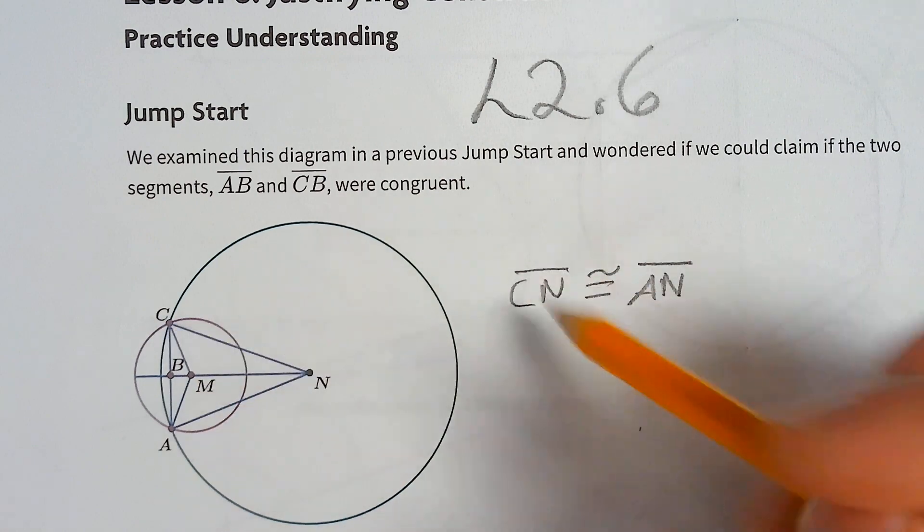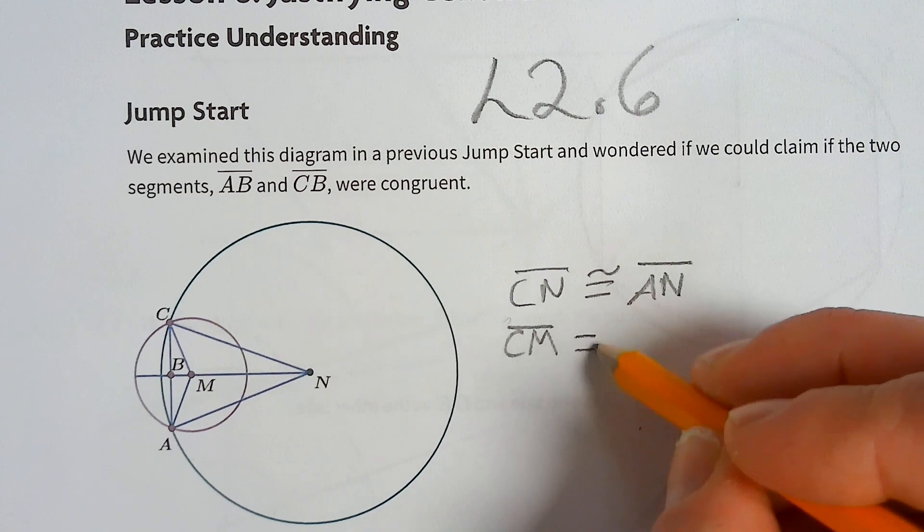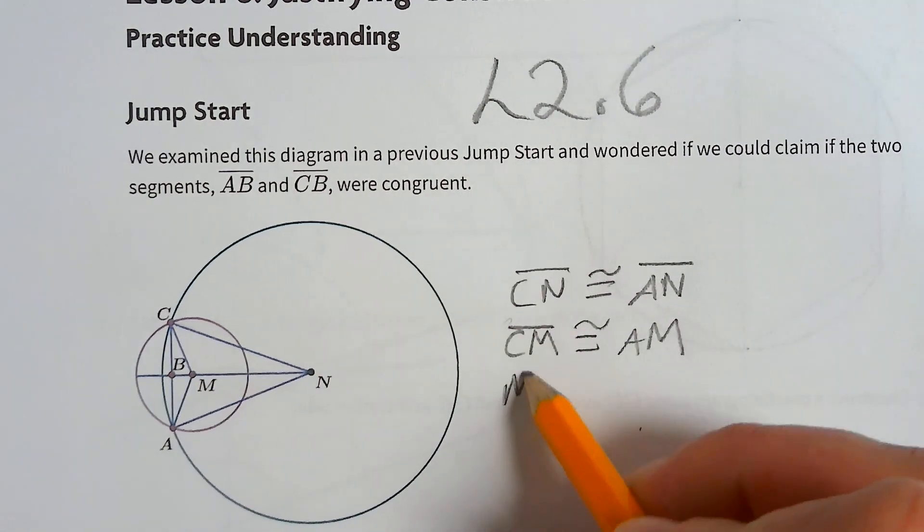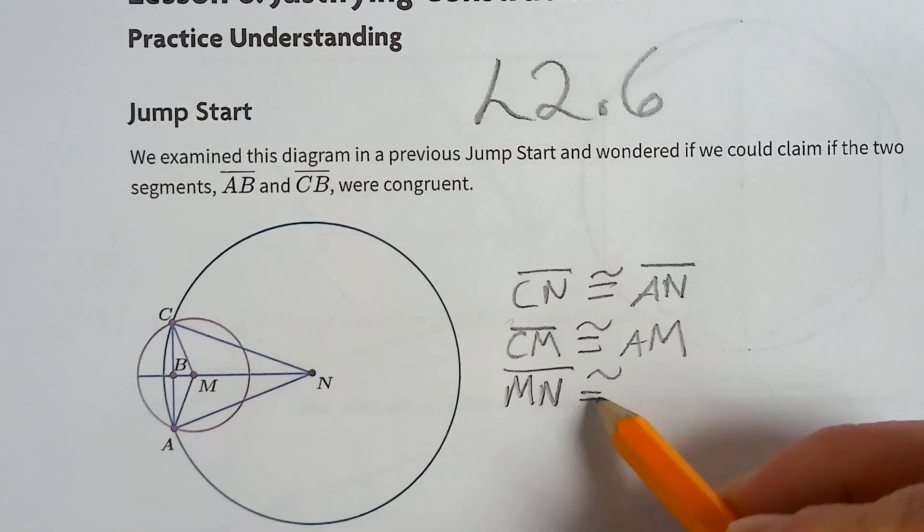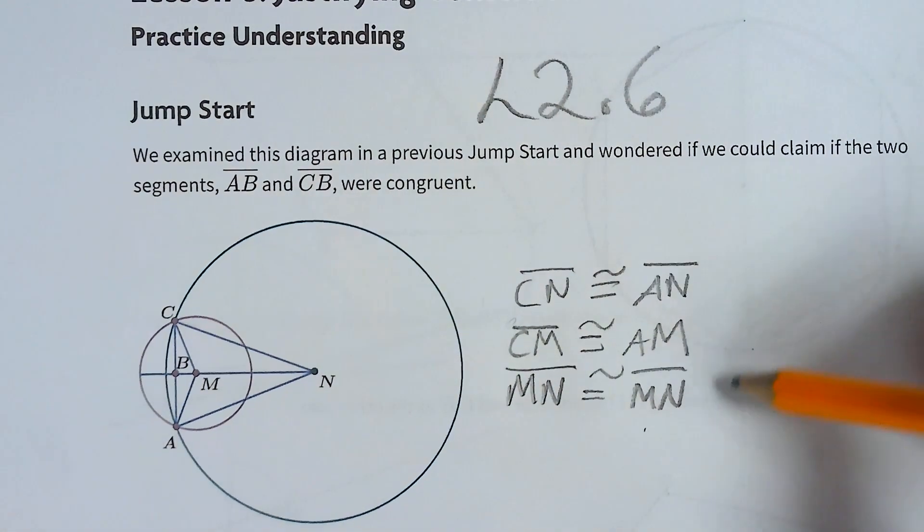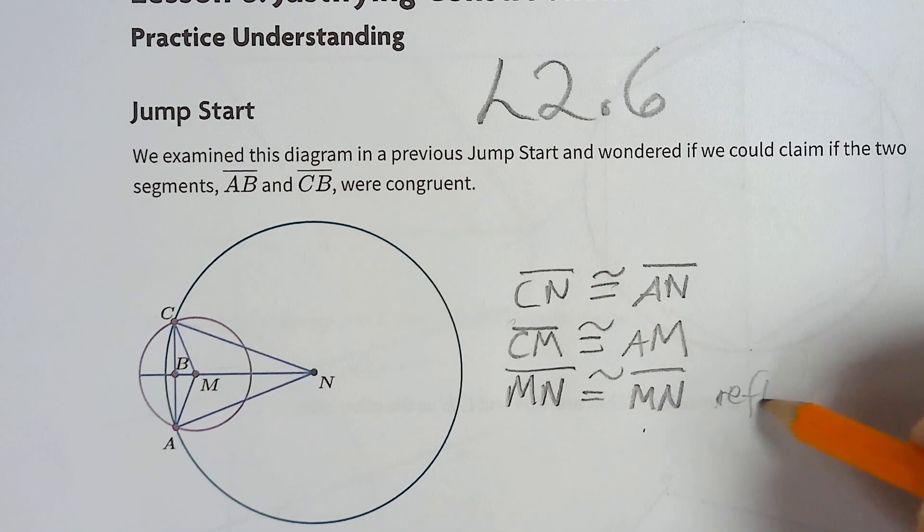So we can say that CM is congruent to AM, and MN is congruent to MN. Let's give it, that's a shared side or reflexive.